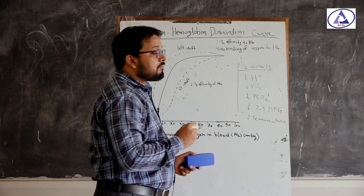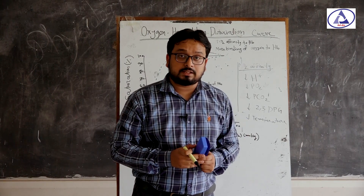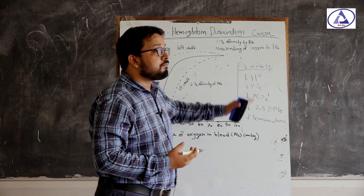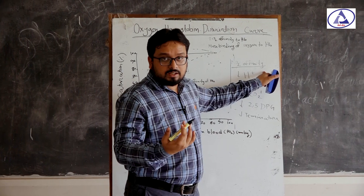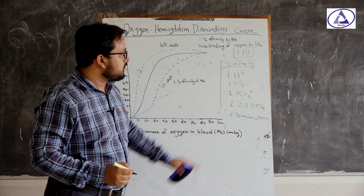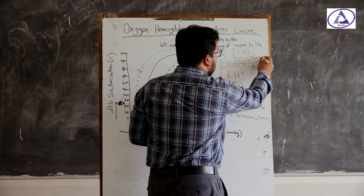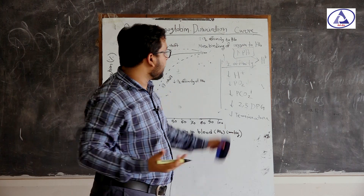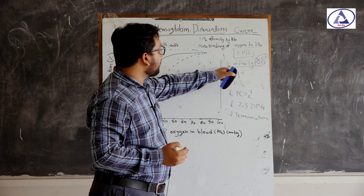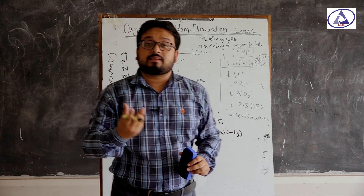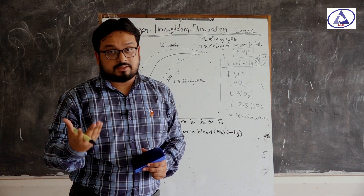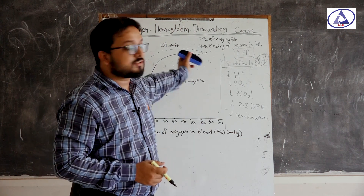One more important point, especially for MCQs: if pH becomes high, that means hydrogen ion concentration decreases, which increases oxygen affinity and causes a left shift. Beside this, some other factors like stored blood — in blood transfusion, we give people stored blood, and this stored blood causes shifting of the dissociation curve to the left.